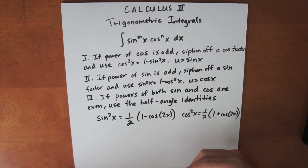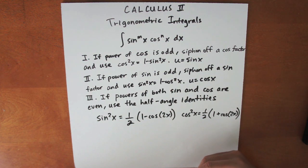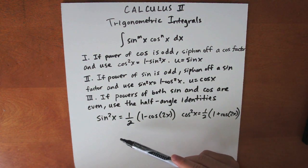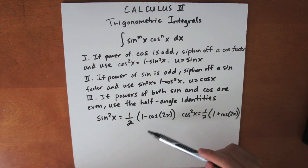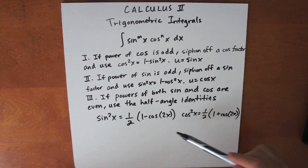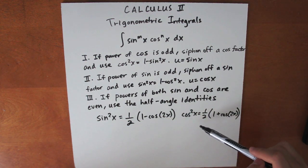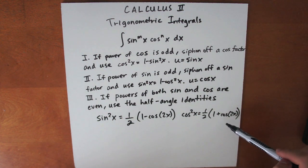The third rule is: if the powers of both sine and cosine are even, use the half angle identities. Sine squared x equals one half times (1 minus cosine 2x), and cosine squared x equals one half times (1 plus cosine 2x).